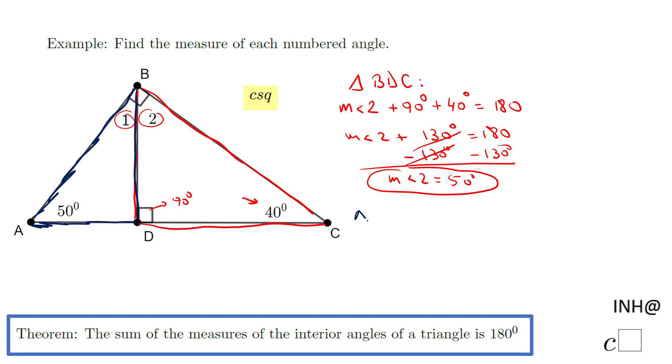Triangle ABD, where we have the same type of situation. We know this angle is 50°, and this angle here is going to be 90°. Why? Because these two angles form a line. They are linear pairs, so obviously this one should be 90°. So I'm going to have a similar equation.